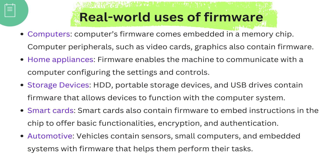In storage devices such as hard disk drives, portable storage devices, and USB drives, the firmware inside allows the devices to function with the computer system. Smart cards include an embedded integrated circuit chip called ICC — it could be a microcontroller or a memory chip. Smart cards also contain firmware to embed instructions in the chip to offer basic functionalities like encryption and authentication when doing secure transactions. In vehicles, sensors and small computers have built-in systems with firmware that help them perform their tasks.